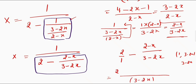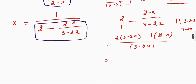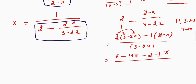The next step is to multiply this 2 with 3 minus 2x, and multiply 1 with 2 minus x. So 2 times 3 gives 6, minus 2 times 2x gives 4x, minus 1 times 2 minus x gives negative 2 plus x, divided by 3 minus 2x. So I get 6 minus 2 equals 4, and 4 minus negative 4x plus x, which is negative 3x, divided by 3 minus 2x.